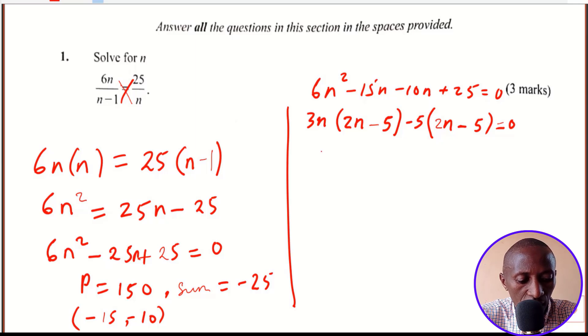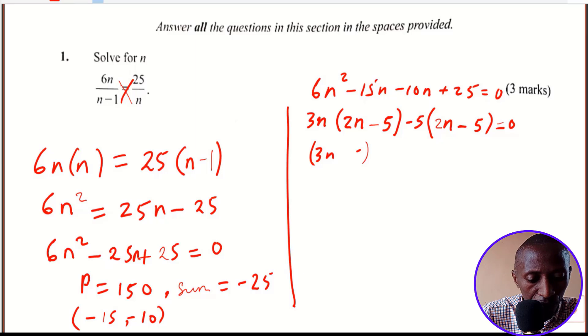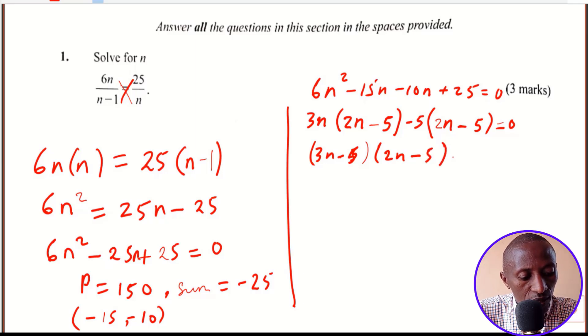So we get the factors as 3n minus 5, and 2n minus 5. This is equal to 0.